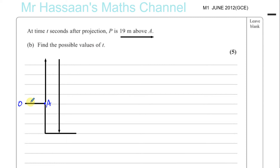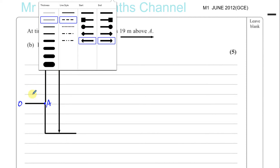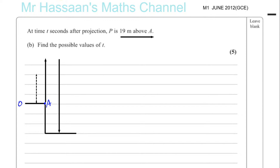There is a certain point where the particle is 19 meters above A — not above the ground, above A. It reaches 19 meters above A on its way up, and then it reaches 19 meters above A again on its way down. That is why the question asks for the possible values of t — there are two times when the particle is at that height.